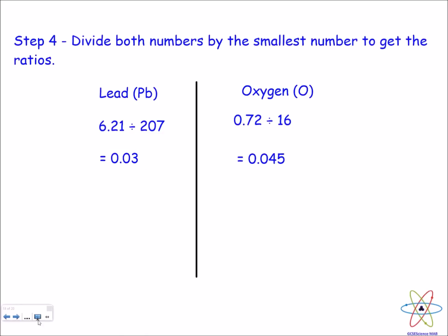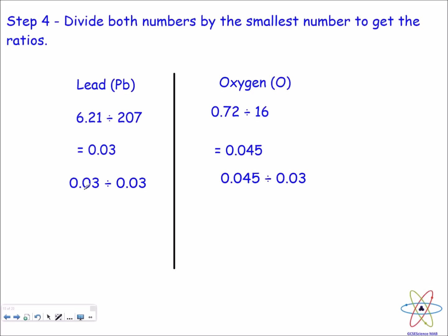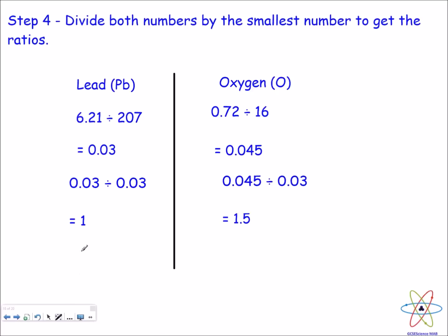Now what we've got to do is divide these two numbers here by the smallest one of the two, and as we established earlier that's 0.03. So we get 0.03 divided by 0.03, 0.045 divided by 0.03, and that gives us 1 for lead and 1.5 for oxygen.